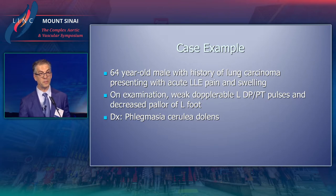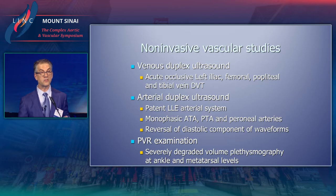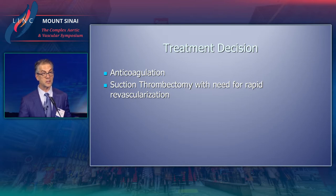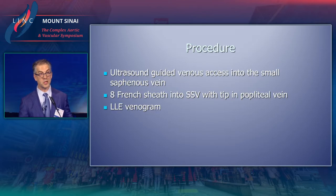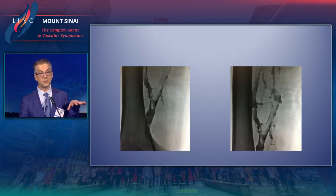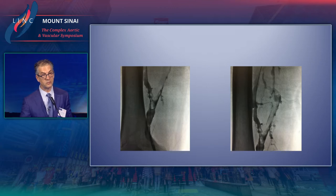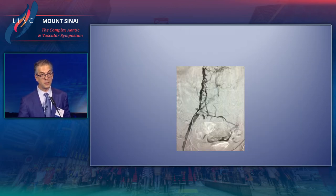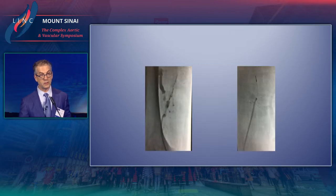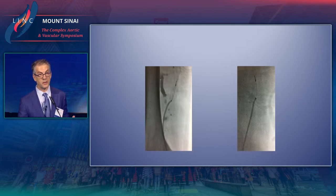Here, a patient presenting with very severe phlegmasia. The non-invasive study showed monophasic waveforms on the arterial study. The goal was to get it open as quickly as possible. We used small saphenous vein access, performed a venogram, and were able to get into both the profunda femoris vein and the femoral vein using complete suction thrombectomy. The iliac vein was occluded. You can see us using the Penumbra device with the separator — in these cases you have to use the separator, otherwise you'll clog everything up.